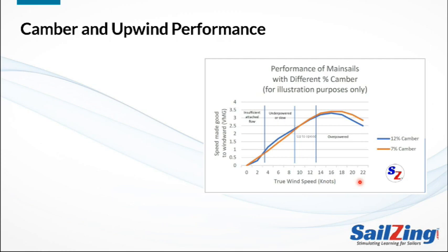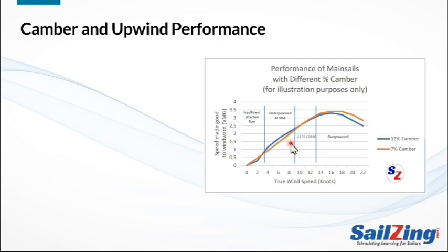Let's apply these concepts to understand how to maximize upwind performance. Here's a graph showing upwind performance against wind speed for a fictional sailboat. The bottom axis is wind speed, and the left axis is the velocity made good to windward, or VMG. The graph compares a fuller sail — 12% camber, the blue line — to a flatter sail with 7% camber, the orange line. The numbers are made up but are meant to illustrate the concepts.